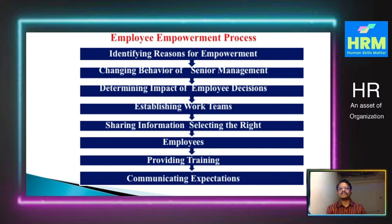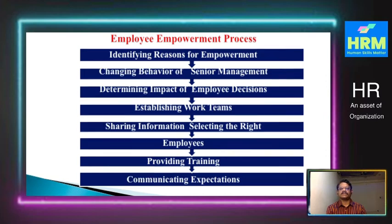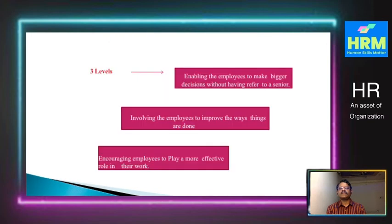You can see the complete process of employee empowerment in the organization. There are three levels: first, enabling employees to make bigger decisions without referring to seniors — they can take decisions without permission. Second, involving employees to improve the ways things are done, so they participate and take decisions without permission from others. Third, increasing employees to play a more effective role in their work. These are the three important levels in employee empowerment.